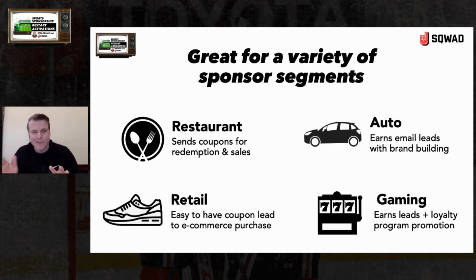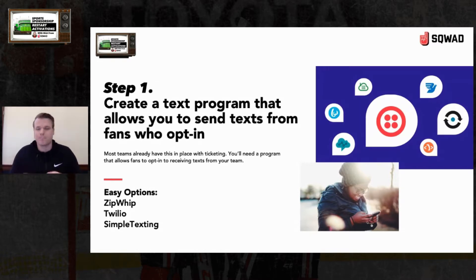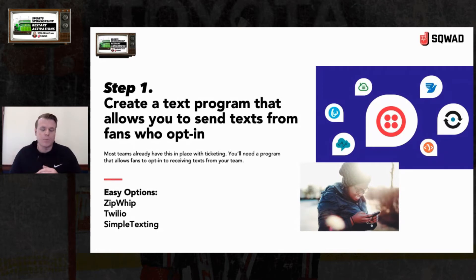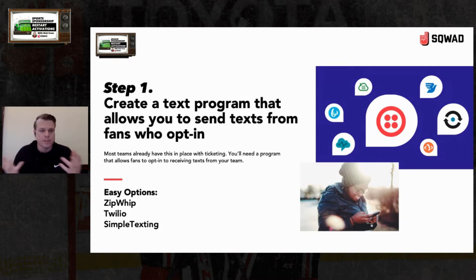Step one: create a text program that allows you to send texts to fans who opt in. You probably already have something like this with your ticketing office — there's no reason you can't do it with your sponsorship as well. Zip Whip has been good, Twilio is the big flexible one, Simple Texting is cheap but really good, and Bandwidth is another option. Zip Whip and Simple Texting are the easiest plug-and-play ones. You'll need to set up a program so fans can text in and opt in.